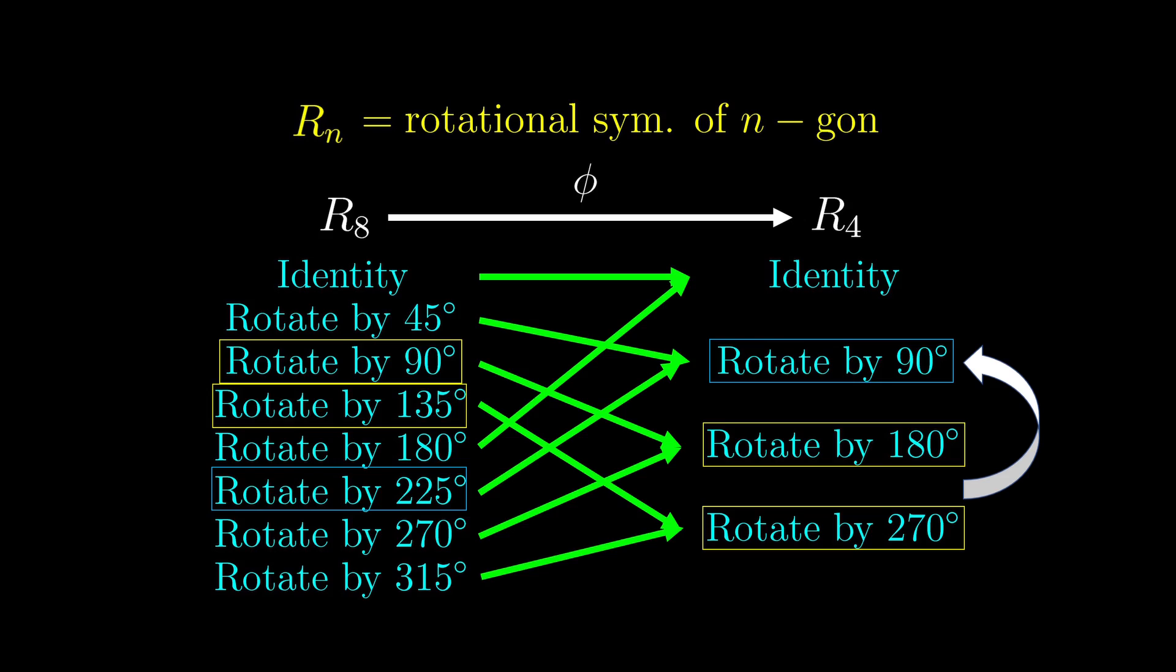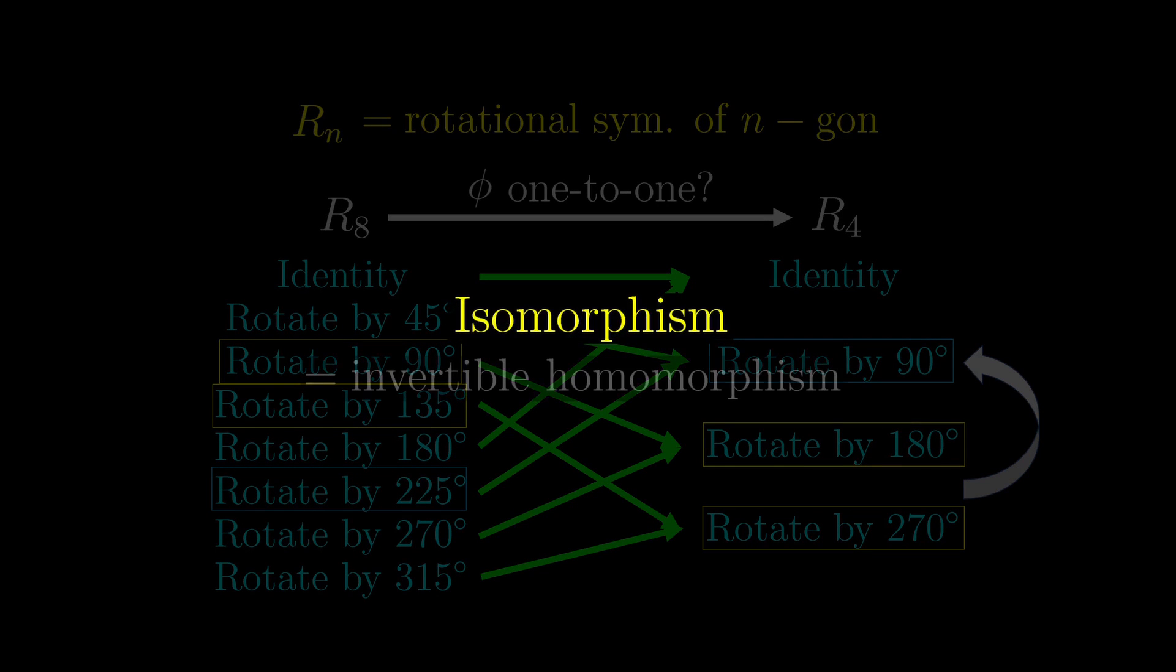But we definitely don't want to say these two groups are the same. The main obstacle is that the function phi is not invertible. If you don't know what that means, this homomorphism phi is not a one-to-one function. In fact, any invertible homomorphism is called an isomorphism.